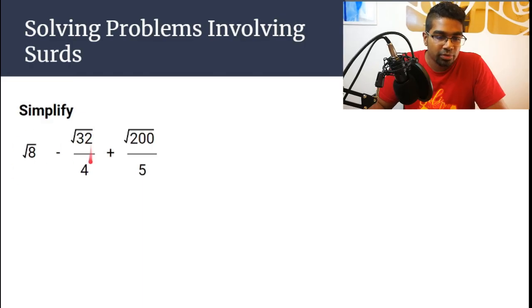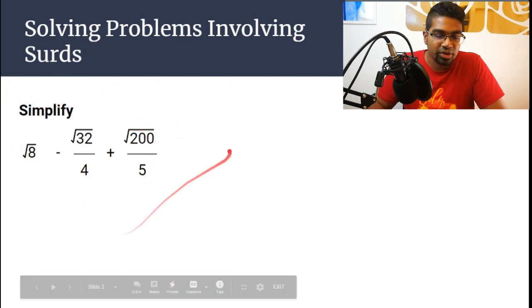Before we get to our problem, do you know what a surd is? If you do, comment down below on what you think a surd is. So let's look at our problem. We have square root of 8 minus square root of 32 over 4 plus square root of 200 over 5. The question is to simplify this expression.